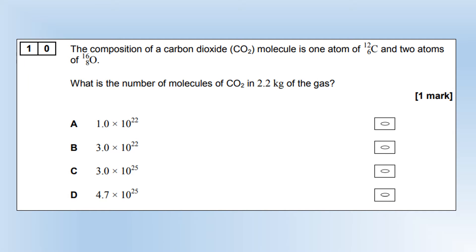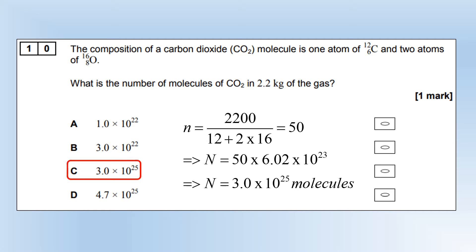The composition of carbon dioxide is one atom of carbon, two atoms of oxygen. What is the number of molecules of CO2 in 2.2 kilograms of the gas? We're going to first calculate the number of moles using the total mass divided by the molecular mass. There are two oxygen atoms, so we have to have 2 times 16. We can figure out there are 50 moles. Once we know the number of moles, we can multiply by Avogadro's constant, and we can get the number of molecules, which is option C.